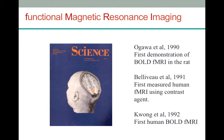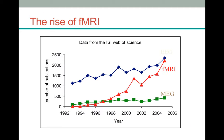fMRI is a relatively new piece of technology. It was only in 1990 that Ogawa and colleagues first demonstrated the BOLD response in rats. BOLD is the signal of interest in fMRI, and I will explain more about that in a moment. The first BOLD response in humans was measured by Kwong and colleagues in 1992. fMRI is exciting stuff and has increased in popularity since the BOLD signal was first measured.